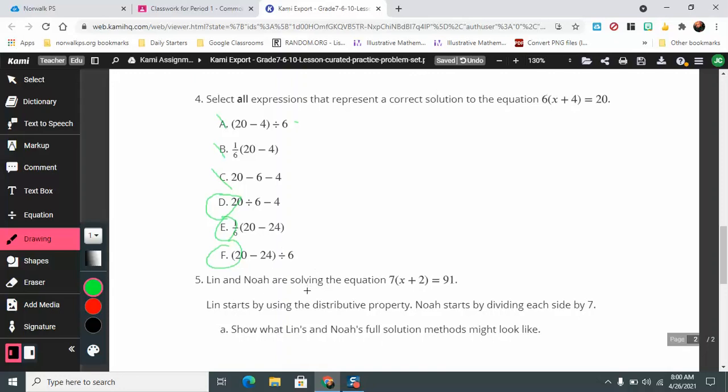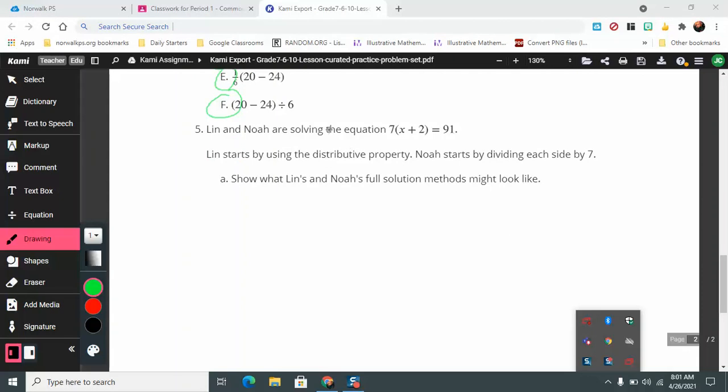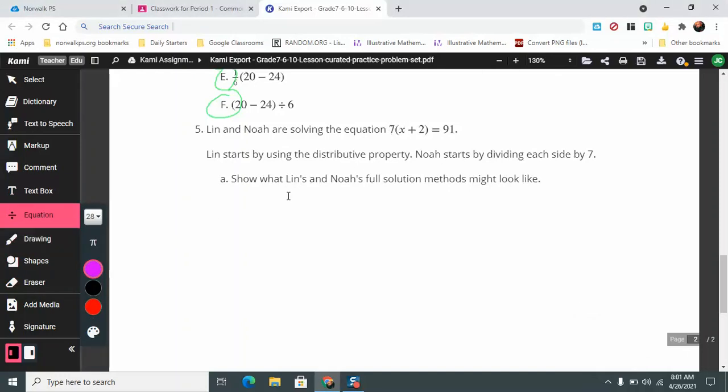Let's take a look at the last problem. This final problem here, we have Lynn and Noah solving an equation, 7 times x plus 2 equals 91. Lynn uses the distributive property, but Noah starts by dividing each side by 7. So we're going to do this equation both ways. Starting with the distributive property: if I multiply 7 times x and 7 times 2, that's going to give us 7x plus 14 equals 91. If I subtract 14, that's going to equal 7x equals 77. If I divide by 7, that's going to be x equals 11. Now if we do it the other way, where we just divide first, 7 into 91, that's going to be x plus 2 equals 13. If I subtract 2 on both sides, that's going to equal 11. We get the same solution both cases, and that's what the solutions might look like.